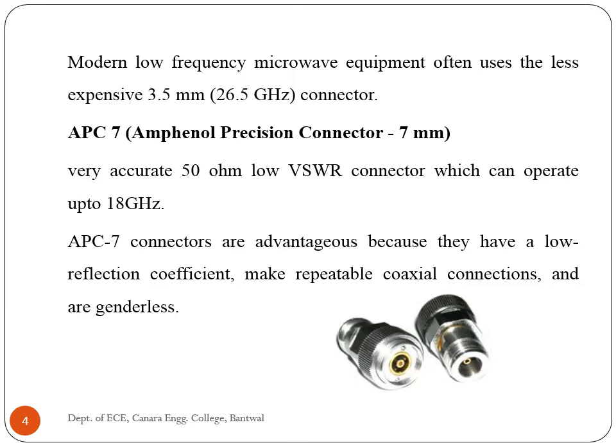Modern low frequency microwave equipment often uses the less expensive 3.5 millimeter connector. APC 7 connectors require adapters to change from the connectors used in the laboratory to those used on everyday products. These adapters are expensive precision devices — very accurate 50 ohm, low VSWR connectors which can operate up to 18 gigahertz. APC 7 connectors are advantageous because they have a low reflection coefficient, make repeatable coaxial connections, and are genderless.